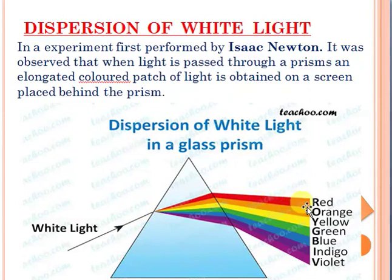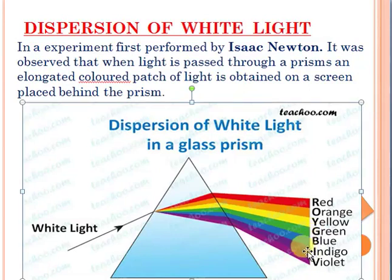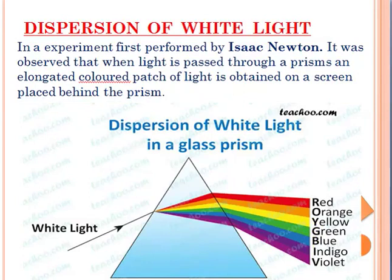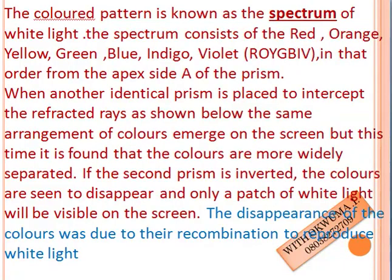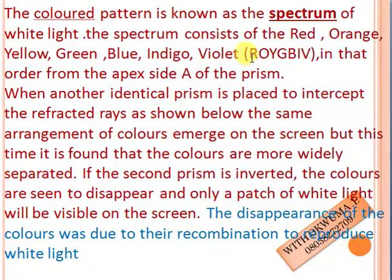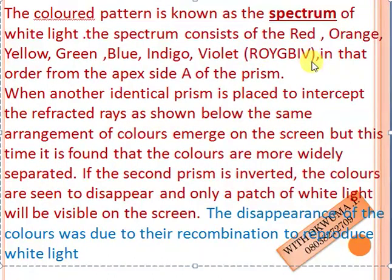These colors are red, orange, yellow, green, blue, indigo, and violet. This color pattern is what we call the spectrum of white light. The spectrum consists of red, orange, yellow, green, blue, indigo, and violet — abbreviated as ROYGBIV for easy remembrance.